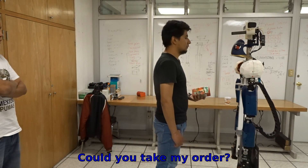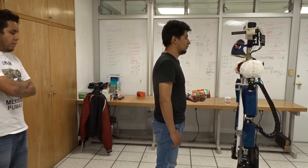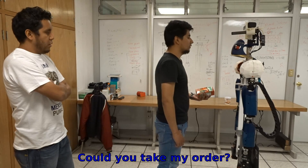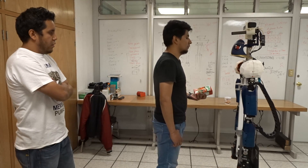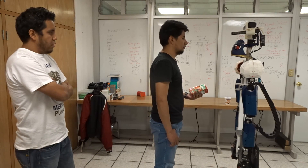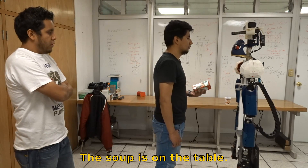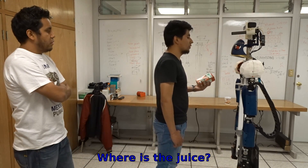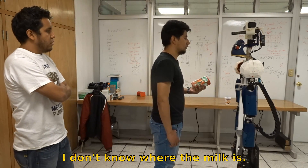Could you take my order? Yes, what is your order? Take the juice and deliver it to Peter. I cannot complete your order because the object is not on the table. Where is the soup? The soup is on the table. Where is the sugar? The sugar is on the table. Where is the juice? John already has the juice. Where is the milk? I don't know where the milk is.